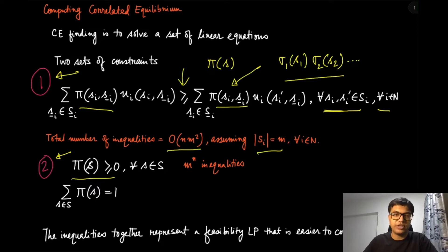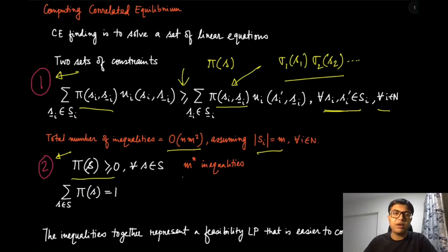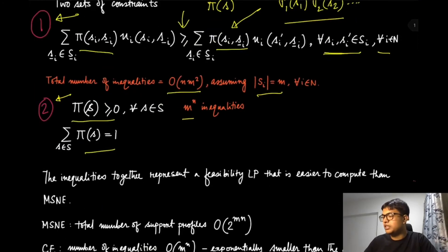The non-negativity constraint makes the count a little larger, because there are m^n possible strategy profiles. So that number increases accordingly, and the final equality — that probabilities sum to one — is just one constraint. Together these inequalities represent the feasibility LP.